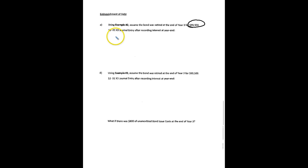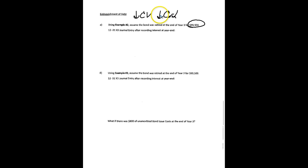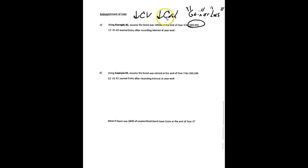In theory, we essentially want to remove the carrying value of the bond — get rid of it. Cash is going to go out, so we're going to give up cash in exchange for the carrying value of the bonds, and the difference is either a gain or a loss. That should sound a little familiar — same thing as if we sold property, plant, and equipment: we get rid of the book value, cash comes in instead of out, and the difference is a gain or loss. Same thing here: we get rid of carrying value, record the cash, and the difference is a gain or loss.